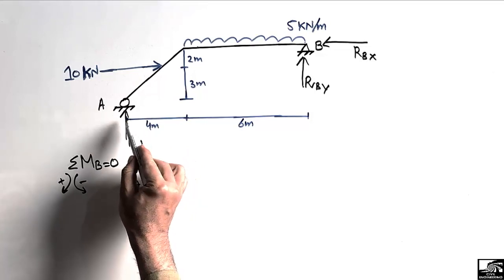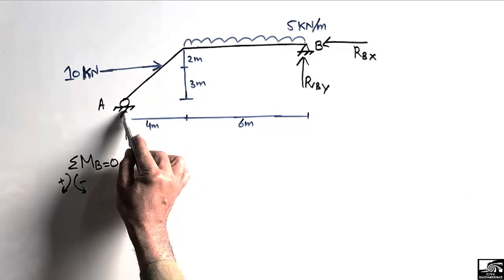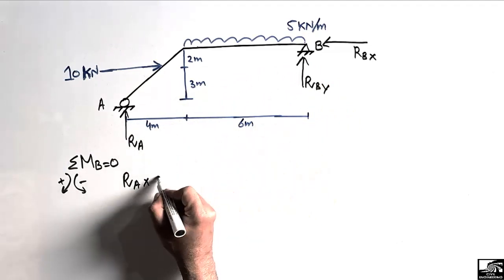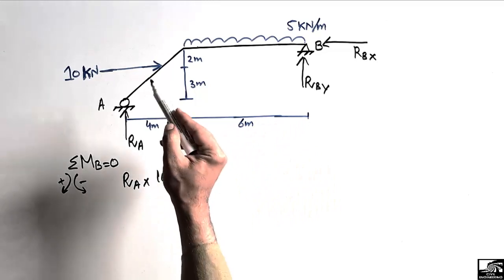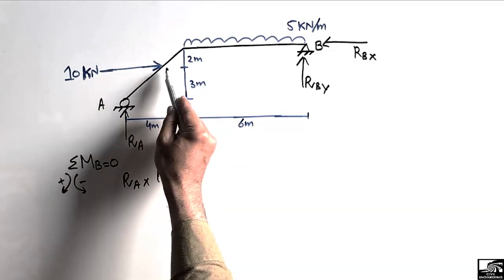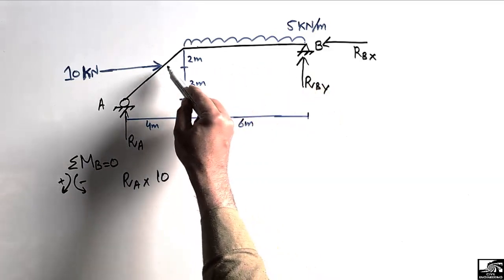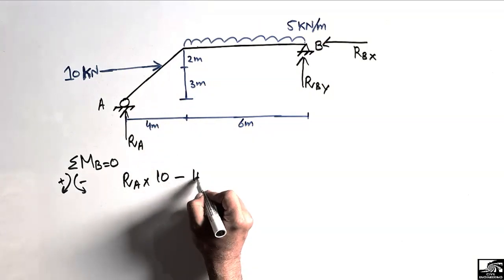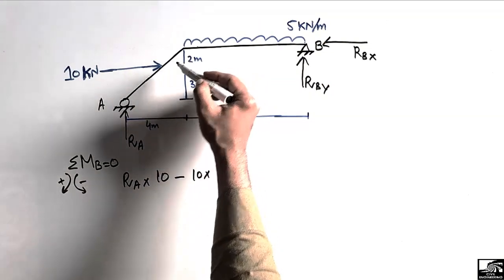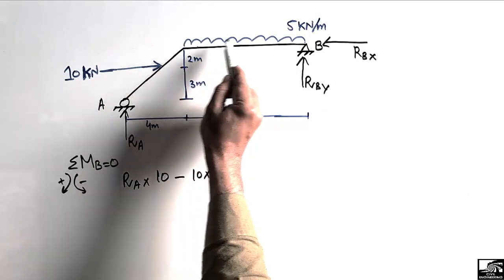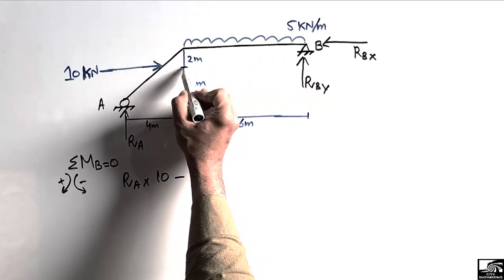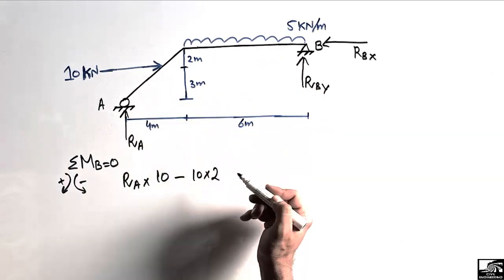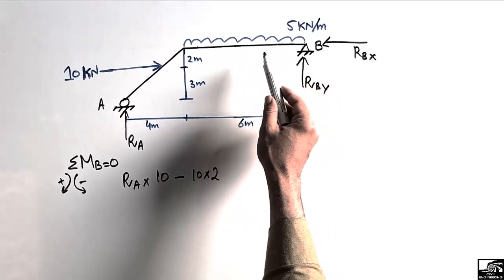RA multiplied by its moment arm — the distance from RA to point B — is 4 meters plus 6 meters, which equals 10 meters. The 10 kilonewton lateral force creates an anti-clockwise moment about point B, so it is negative: minus 10 multiplied by its moment arm, which is the vertical distance of 2 meters.